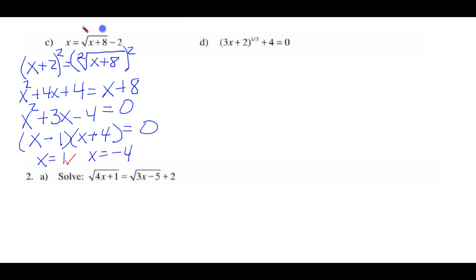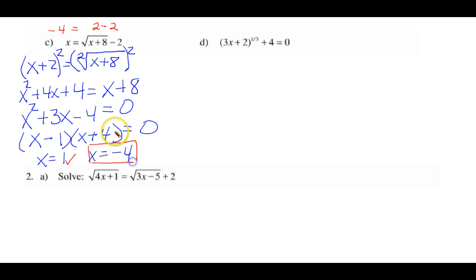If we put negative 4 in, we get negative 4 plus 8 gives plus 4, square root is 2, minus 2 equals 0. But negative 4 does not equal 0. So this answer, even though it was generated through the process, is called an extraneous root and we don't include it. In Math Lab, if they give you the set {1, negative 4} as a multiple choice option and you select it, they'll count it wrong. The only answer you can put in is x equals 1.